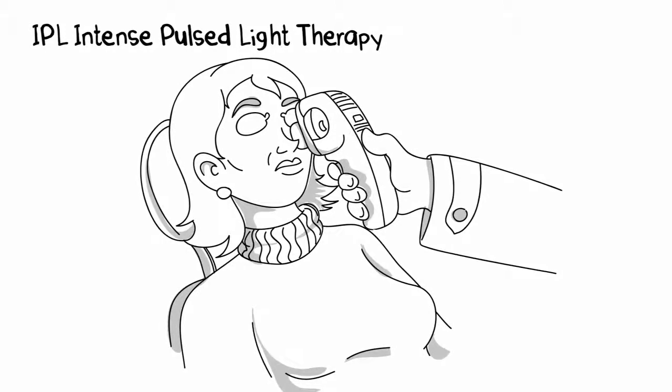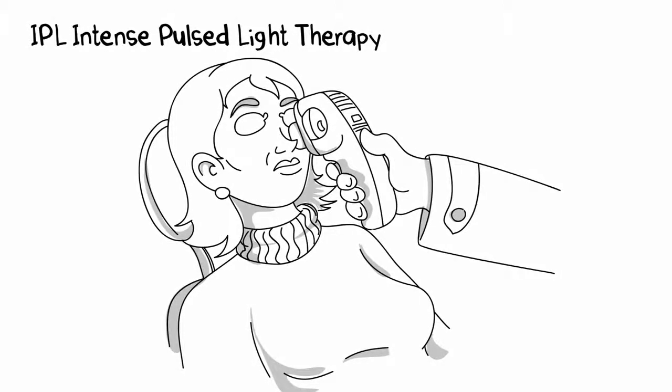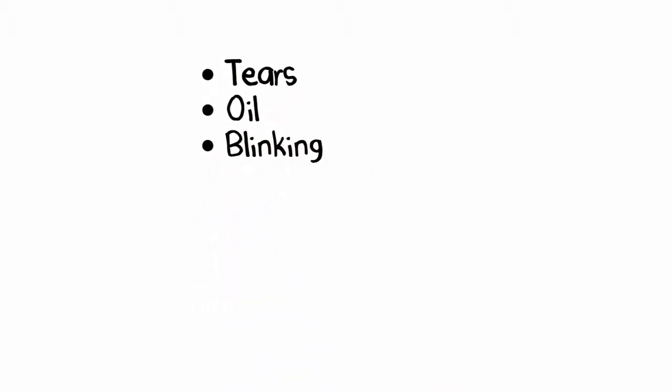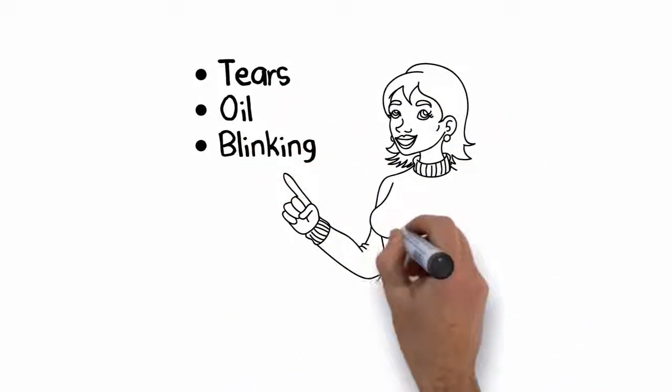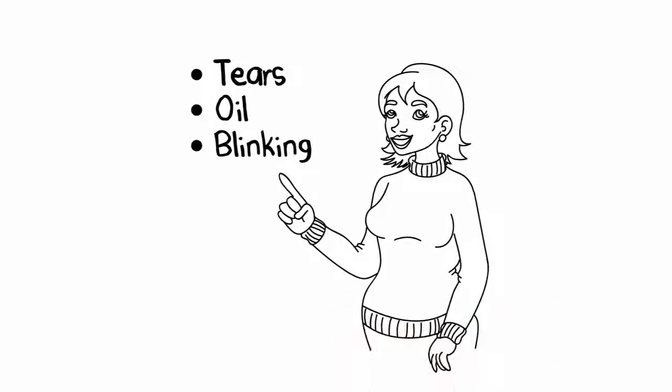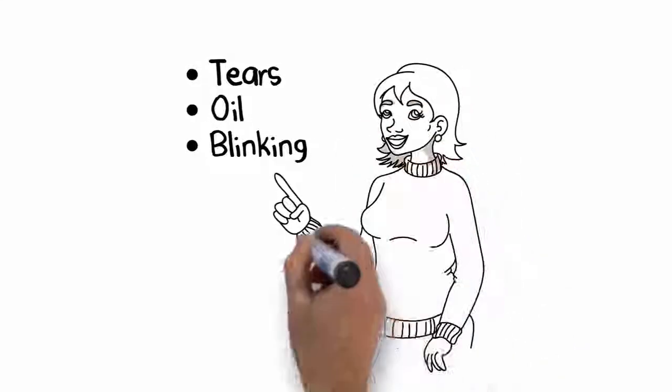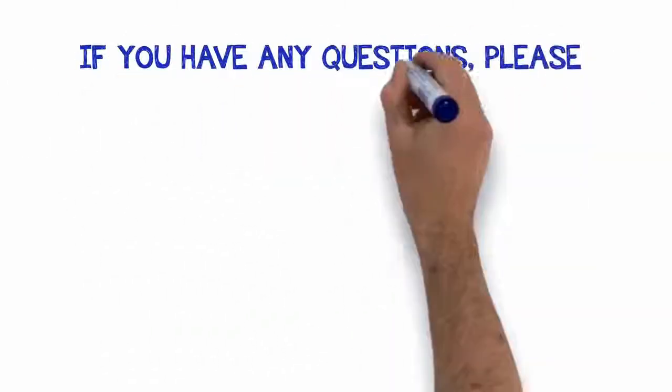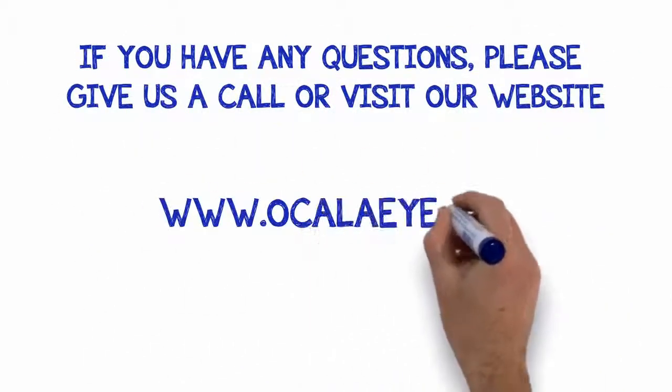We'll tell you more about these if we think they can help. Tears, oil, and blinking—when we can get them all working together, you can see a big difference in the way your eyes feel. But the first step is to have a dry eye evaluation. If you have any questions, give us a call or visit our website.